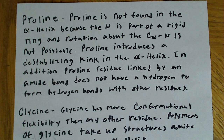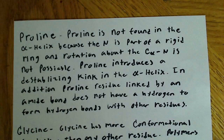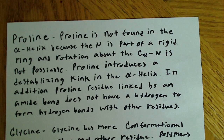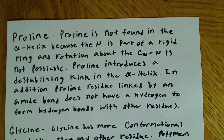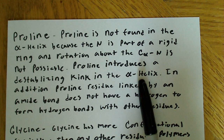In this video I just want to talk about two residues that, if you see these in a sequence you're given, you can almost assume that that sequence is not going to be part of an alpha helix. Proline is not found in the alpha helix because the nitrogen is part of a rigid ring and rotation about the C-alpha N is not possible. Proline introduces a destabilizing kink in the alpha helix, and proline residues linked by an amide bond do not have a hydrogen to form hydrogen bonds with other residues.